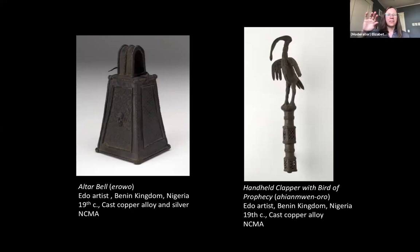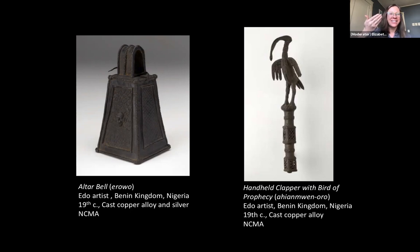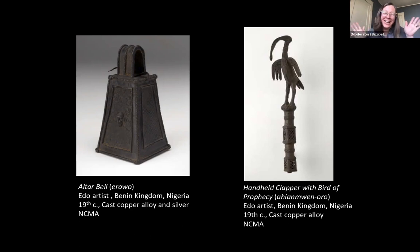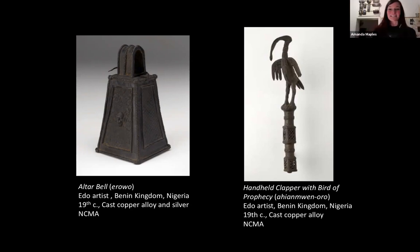There's also a metaphor here: the courtiers are like squawking birds, hitting these staffs and making a clanging noise. They're the bird that prophesied the Oba's defeat, and the Oba is saying: I won, you were wrong. These staffs were literally all over the place reminding the courtiers of their place — always referring to the wisdom of the king.